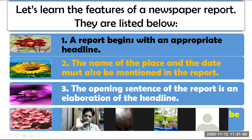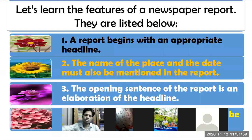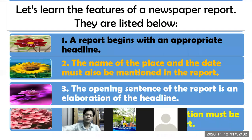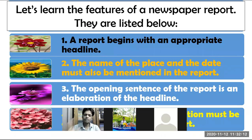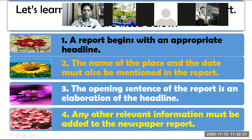Number three: the opening sentence of the report is an elaboration of the headline. That means the opening sentence elaborates the headline. For example, if the headline is 'Road Accident,' the opening sentence expands on that. Number four: any other relevant information must be added to the newspaper report.